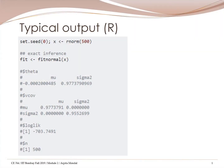Let us now discuss the implementation of the maximum likelihood method of estimation in the computer packages R and MATLAB. We begin with R. Here, we are first generating a data series X, which belongs to the normal distribution. The rnorm command is used to generate data which belong to the normal distribution.